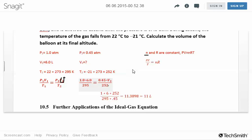Then divide by 0.45 to isolate V₂. I have that written more neatly at the bottom. You get 11.3898.